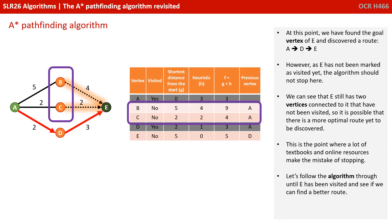We can see that E still has two vertices connected to it that have not been visited, so it's possible there's a more optimal route yet to be discovered, and this is the point where a lot of textbooks and online resources make the mistake of stopping. So let's follow the algorithm through until E has been visited and see if we can find a better route than the one already discovered.